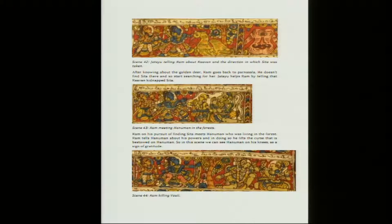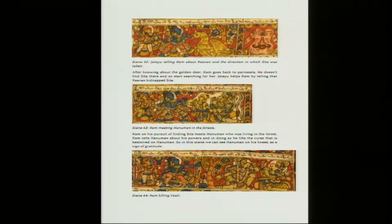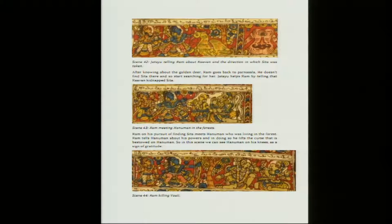There is another character in a separate frame — another demon named Kabandha. Kabandha is a one-eyed, horrendous-looking demon, and on the way when Rama and Lakshmana were searching for Sita, he appears and wanted the two of them to cut off his hands so that his curse would be lifted. This is another small story — but this character is Kabandha for sure.